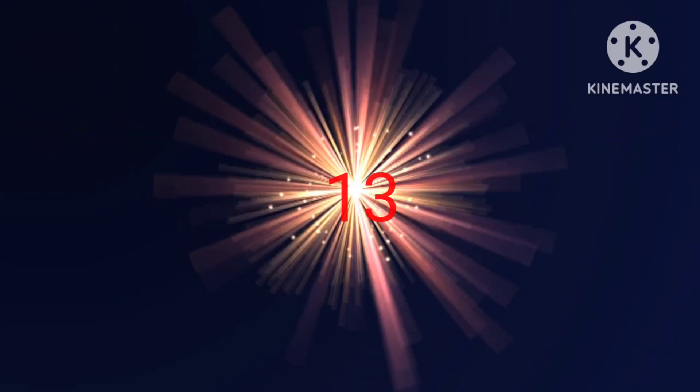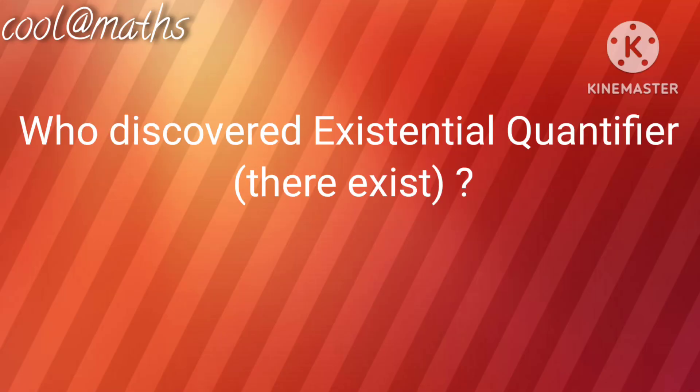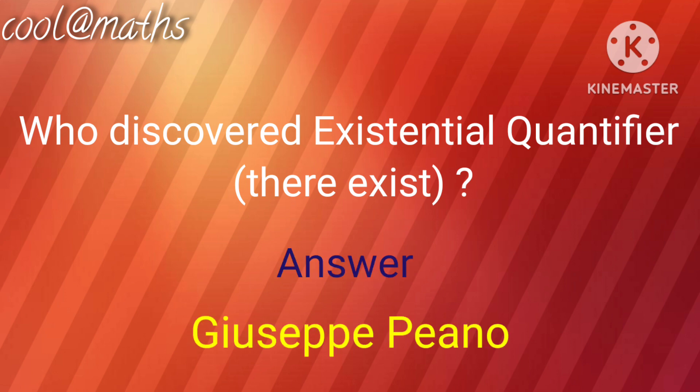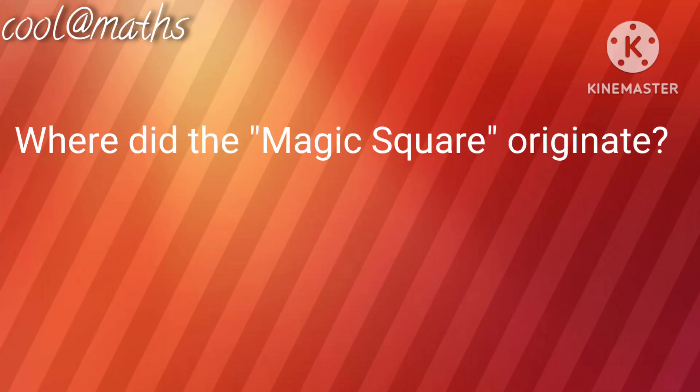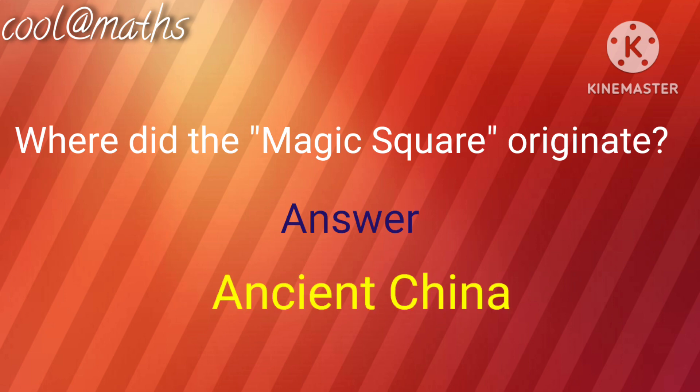Question number 13. Who discovered the existential quantifier? Answer: Giuseppe Peano. Question number 14. Where did the magic square originate? Answer: Ancient China.